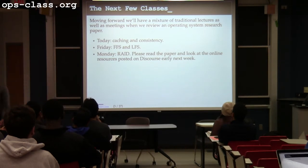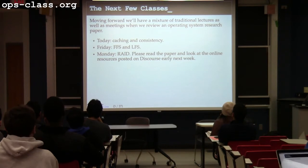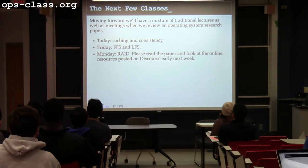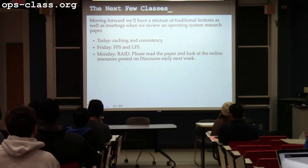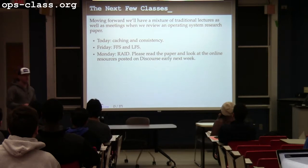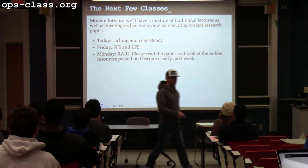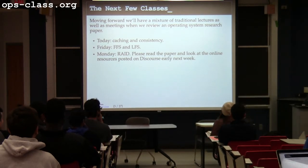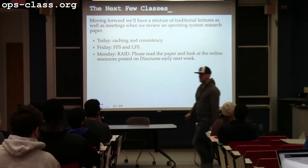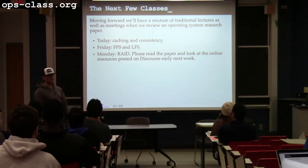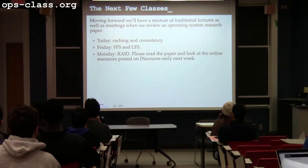So just to understand what's going on for the next few days: today we're going to try to do caching and inconsistency along with journaling. Friday, if we make progress, we'll do a couple of papers on classic file system designs — FFS, which is really crufty and ancient but introduced a lot of core file system features, and then LFS, which was a controversial paper that introduced a radically new design. Assuming we get that done on Friday, Monday we'll talk about RAID. For the RAID class, I'm going to ask you to look through a research paper — it's just a classic paper, cited probably in the gazillions by now — and in class we'll go through it together.